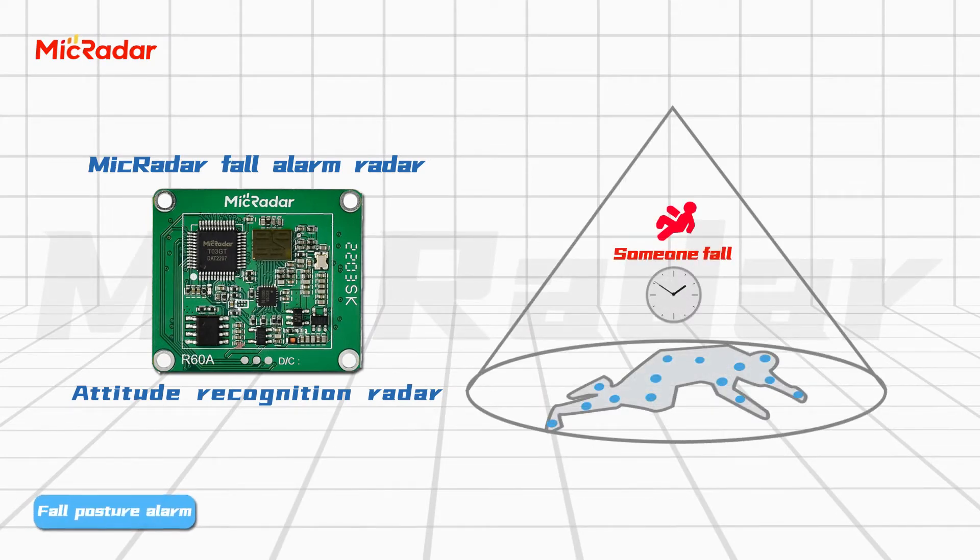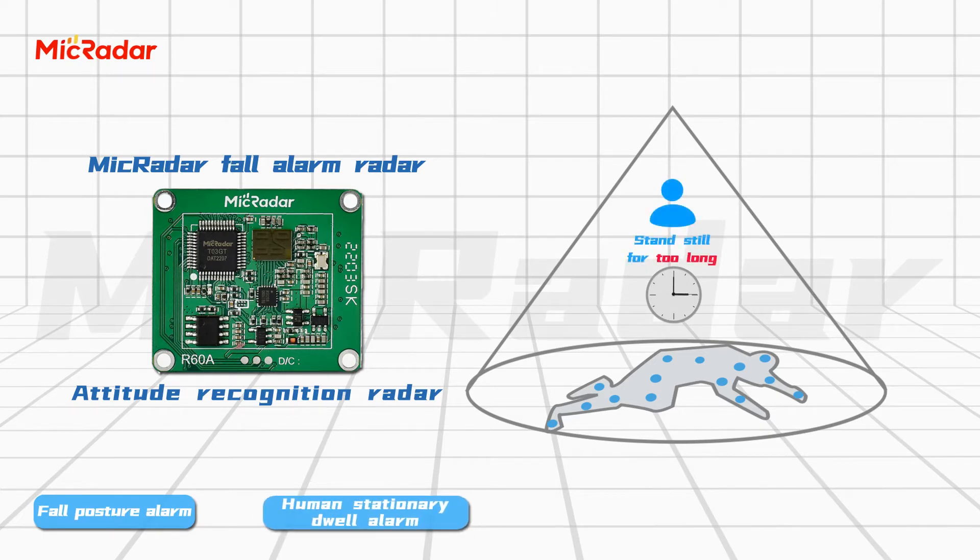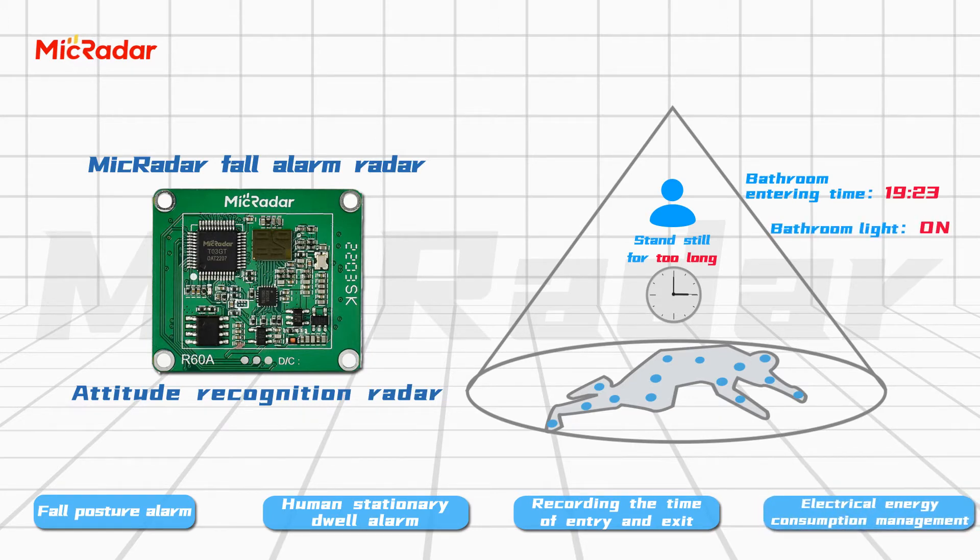It includes Fall Posture Alarm and Human Body Stationary Alarm, records the time of entry and exit of personnel, and can link electrical appliances for energy consumption management.